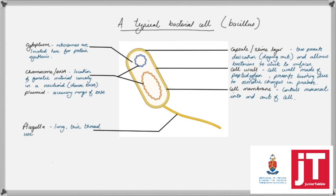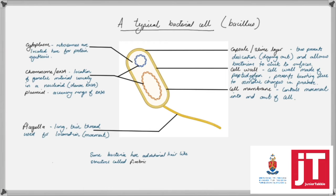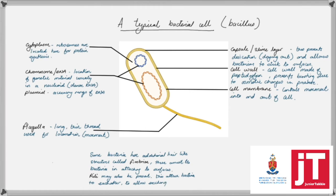Identifying the flagella — this is quite an important part of the bacterium's structure because the flagella is a thread-like structure which allows the bacterium some locomotion, so some movement. Also, some bacteria but not all have additional structures: hair-like structures called fimbriae. These allow the bacteria to attach to surfaces. Also included are little pilae structures which help bacterial cells attach to each other to allow for reproduction.